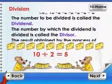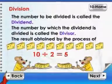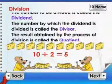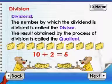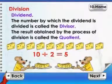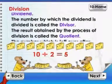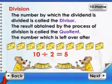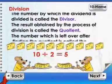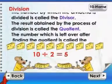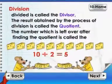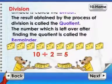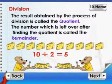The number to be divided is called the dividend. The number by which the dividend is divided is called the divisor. The result obtained by the process of division is called the quotient. The number which is left after finding the quotient is called the remainder.